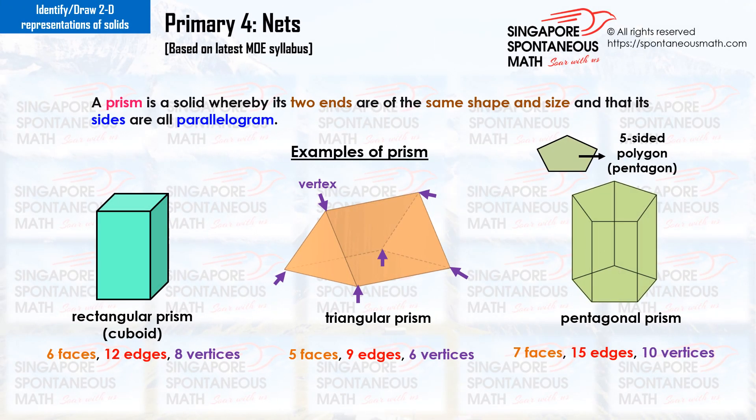A prism is a solid whereby its two ends are of the same shape and size, and its sides are all parallelograms. A cuboid, which is also a rectangular prism, has 6 faces, 12 edges and 8 vertices. A triangular prism has 5 faces, 9 edges and 6 vertices.